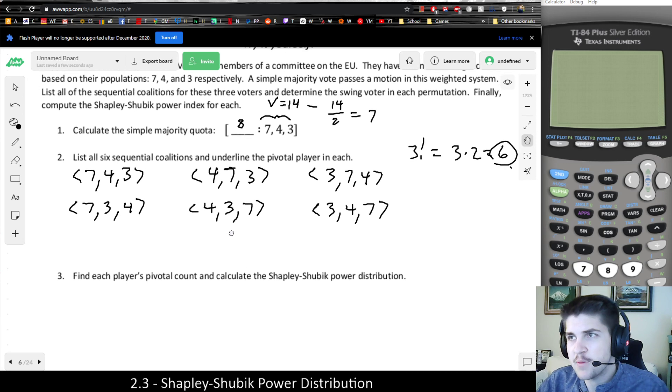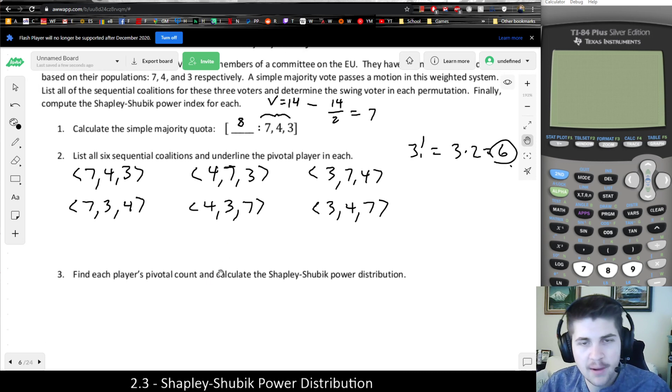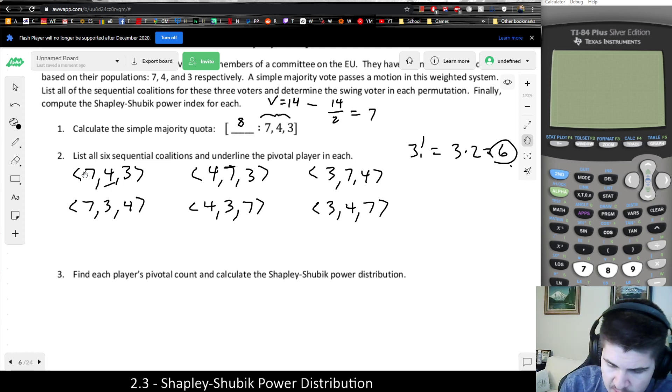It says find each player's pivotal count and calculate the Shapley-Shubik power distribution. So this is a little easier because there's only 6. But basically, remember, the rule is add your way left to right until you make it to the quota. So the quota here is 8. 7 plus 4 is going to make 8. 7 plus 3 would make 8.